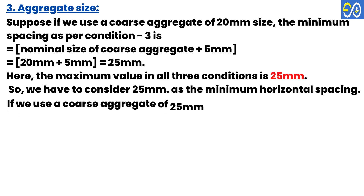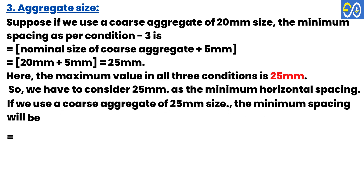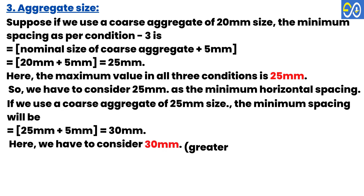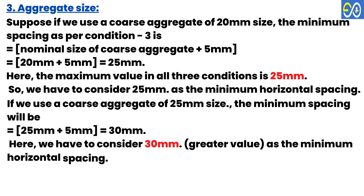If we use a coarse aggregate of 25 millimeters size, the minimum spacing will be 25 + 5 = 30 millimeters. In this case, we have to consider 30 millimeters as the minimum horizontal spacing.